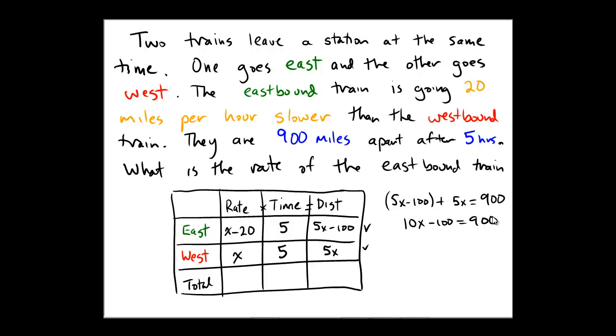That equals 900. We'll add 100 to both sides to yield 10x equals 1000, then divide by 10 to yield x equals 100.